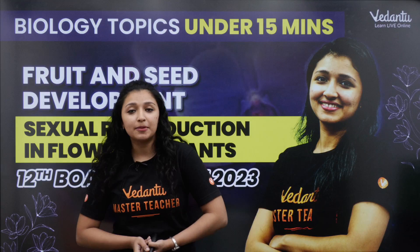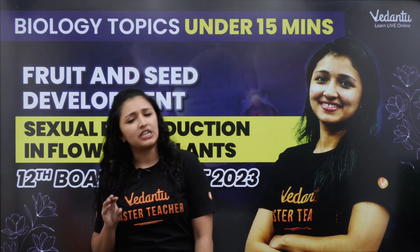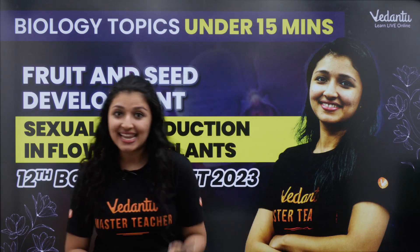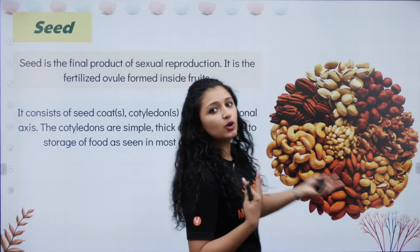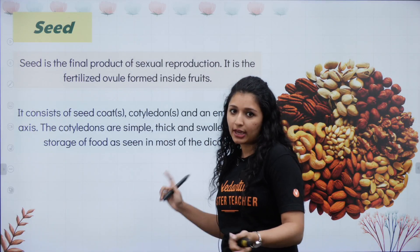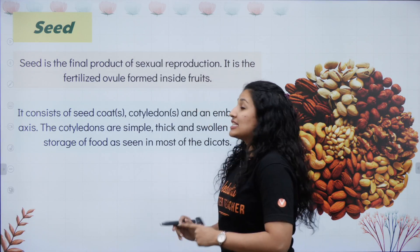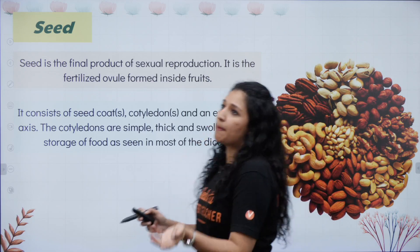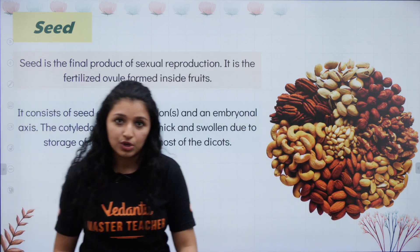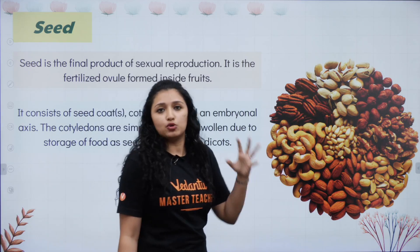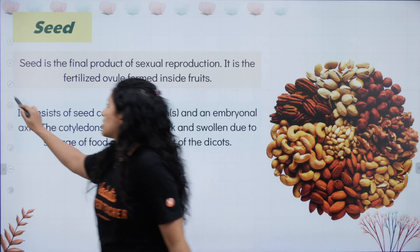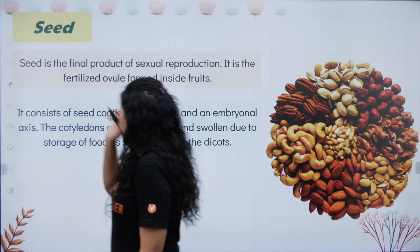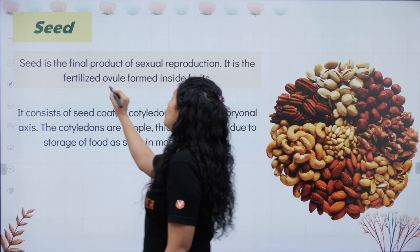Welcome. This topic on post-fertilization events, specifically seed and fruit development, can be covered within 15 minutes. In our previous session we already learnt about endosperm and embryo development. Now starting with seed — seed is the final product of sexual reproduction. Starting from gametogenesis, gamete transfer, fertilization — the seed is what we form. It is the fertilized ovule.